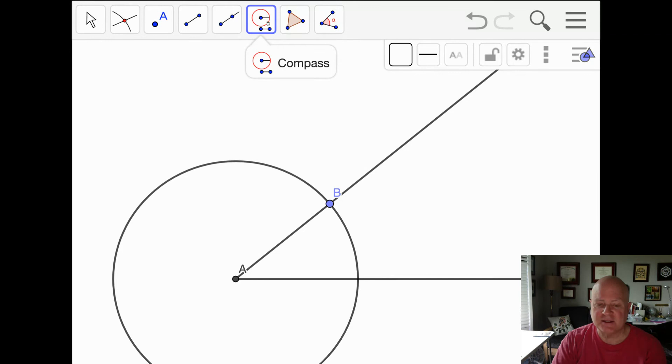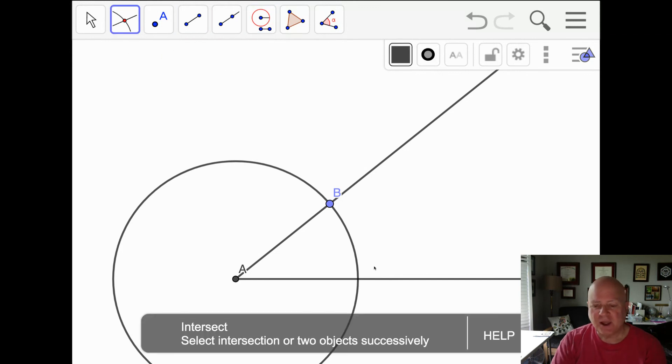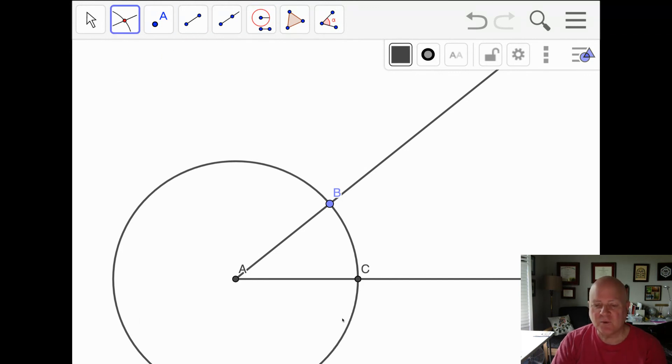So I selected A, B for my radius and then my center point. And where these two intersect, we'll call that C.